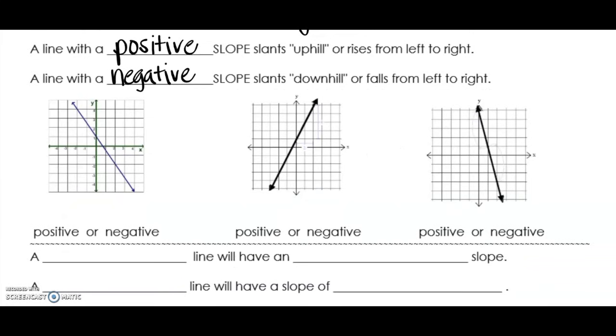So if we're looking at this first example, from the left side of the line to the right side of the line, it is falling, so that would be a negative slope. The sign on that number when we calculate the slope would be negative.